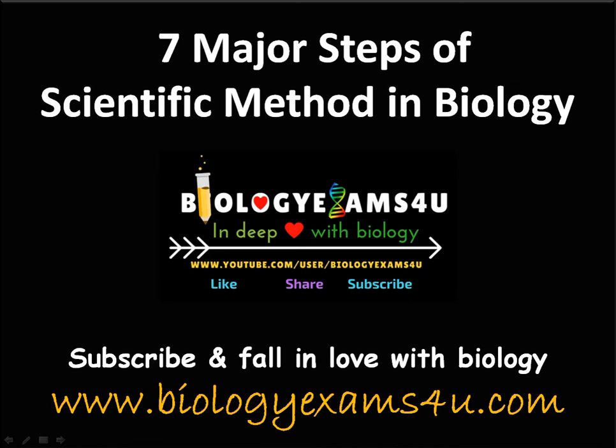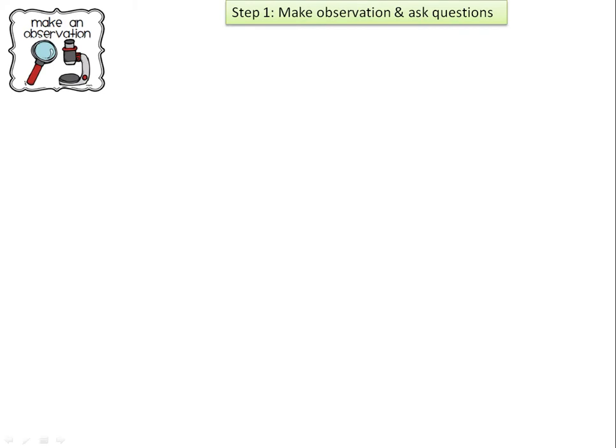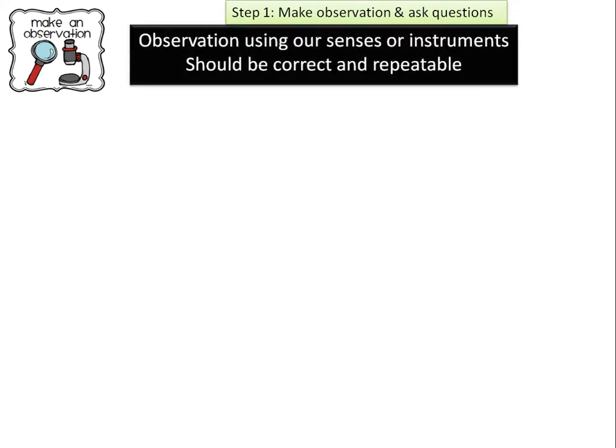Today the topic of our discussion is a quick simplified summary of seven major steps of scientific method in biology. Scientific method starts with making observation. Keen observation is one of the most important features of a researcher. We have to make an observation, and this observation may be direct using our senses, or may be using instruments. If we are studying microorganisms, we need a microscope. The observation should be correct and repeatable.